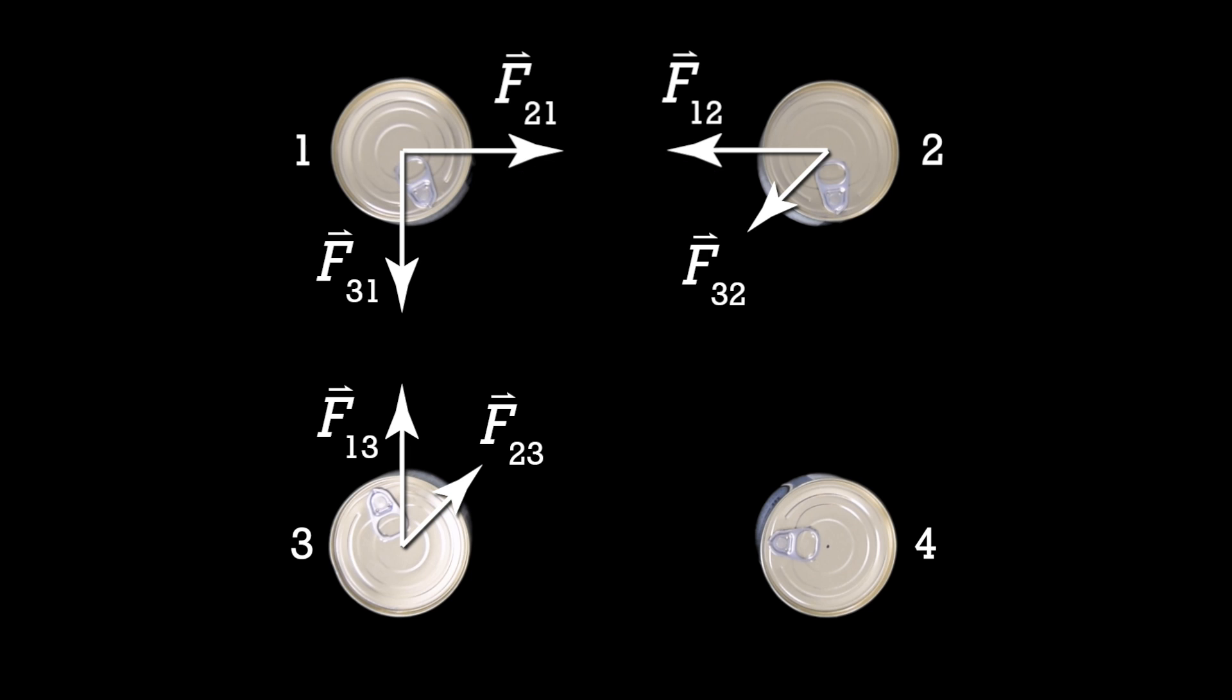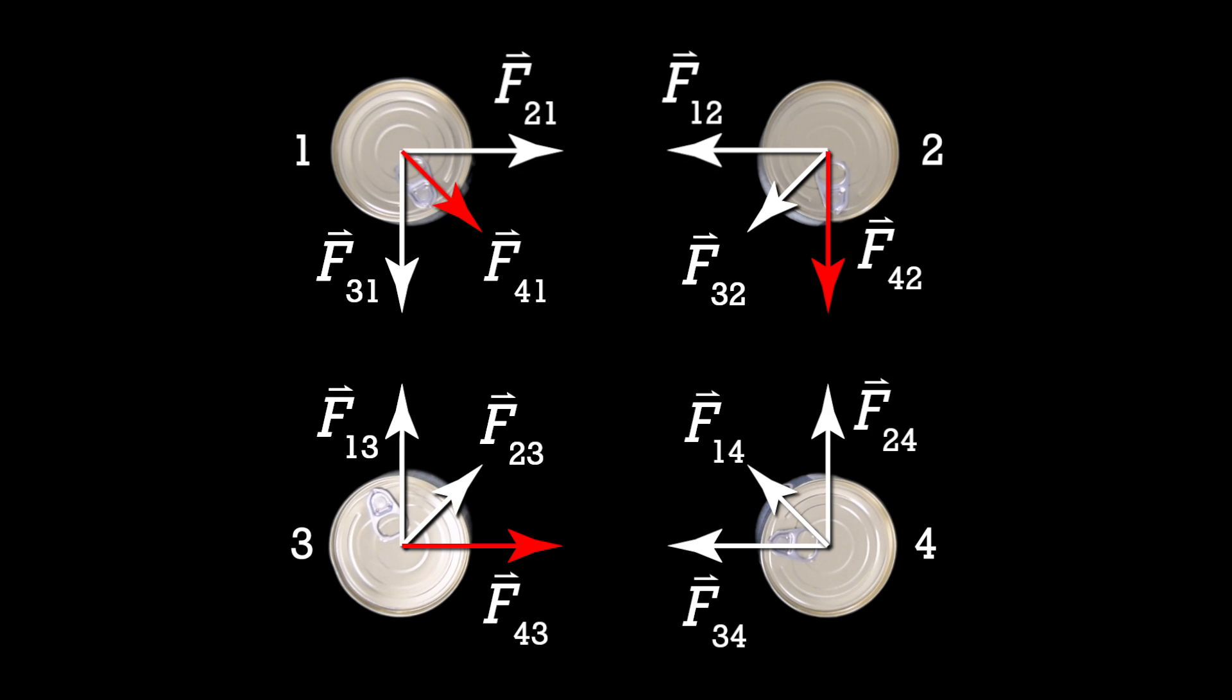And let's add a fourth can. Billy, what additional gravitational forces exist now in this universe? Well, can 4 interacts with the other three cans. So, cans 1, 2, and 3 are each pulled toward can 4 and can 4 is pulled toward cans 1, 2, and 3. That is correct. Okay, let's be done adding cans of dog food to our universe.